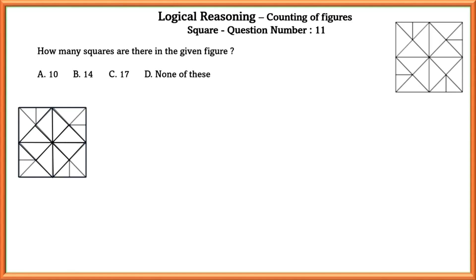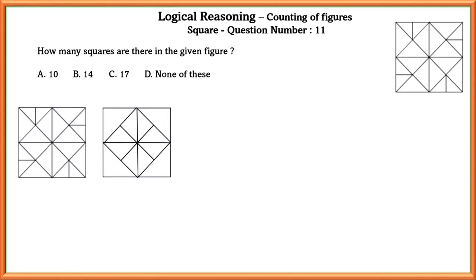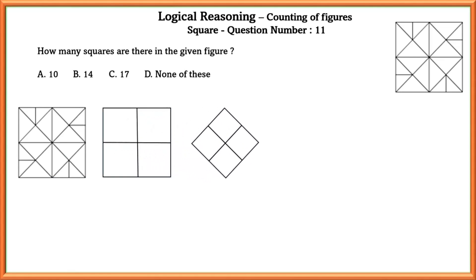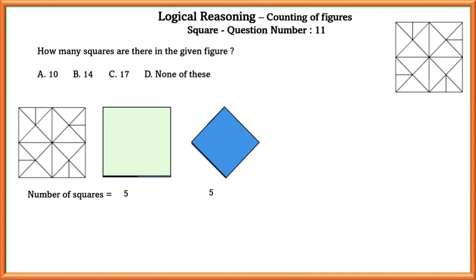Logical reasoning counting of figures — squares. Question number eleven: how many squares are there in the given figure? We separate the figure into parts for convenience. In the first part, one-unit squares equals 4 and two-unit squares equals 5. In the second figure, one-unit squares equals 4 and two-unit squares equals 1. So there are totally 10 squares in the given figure.